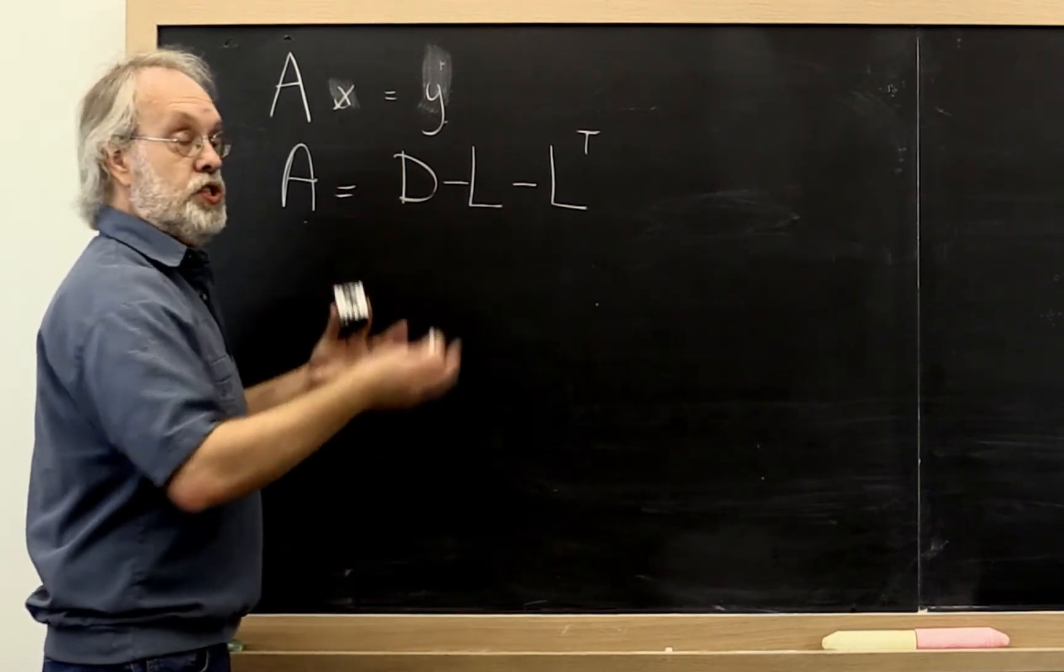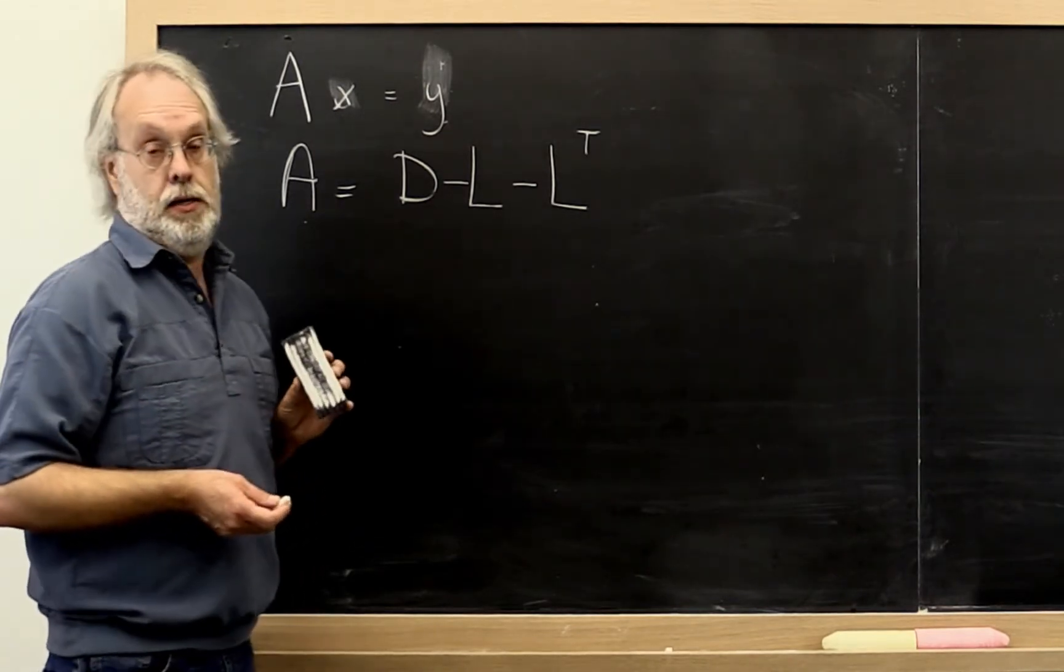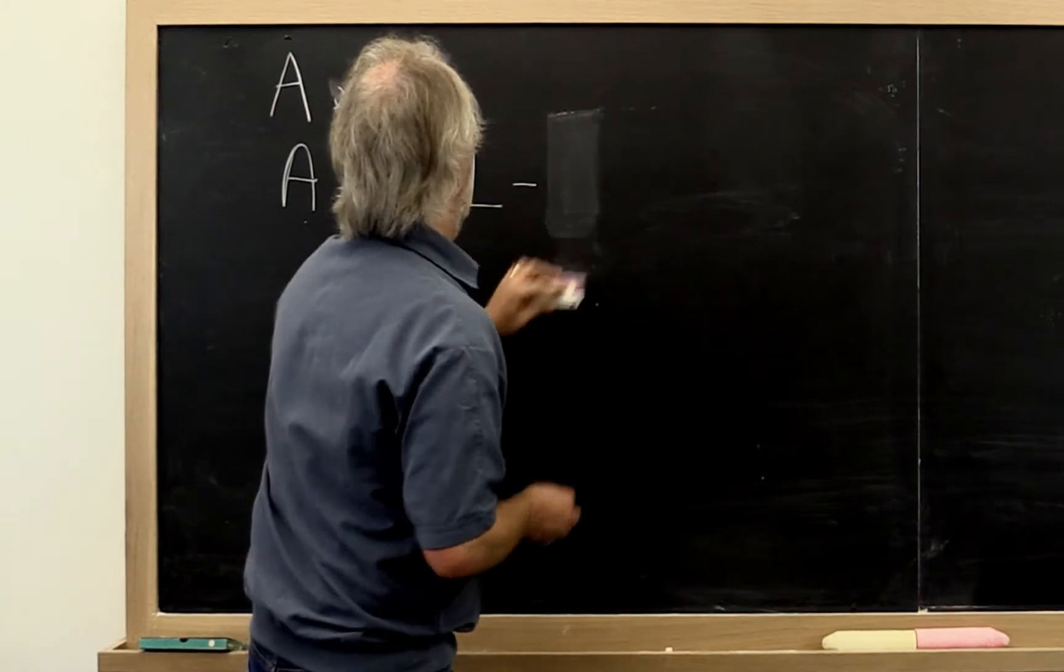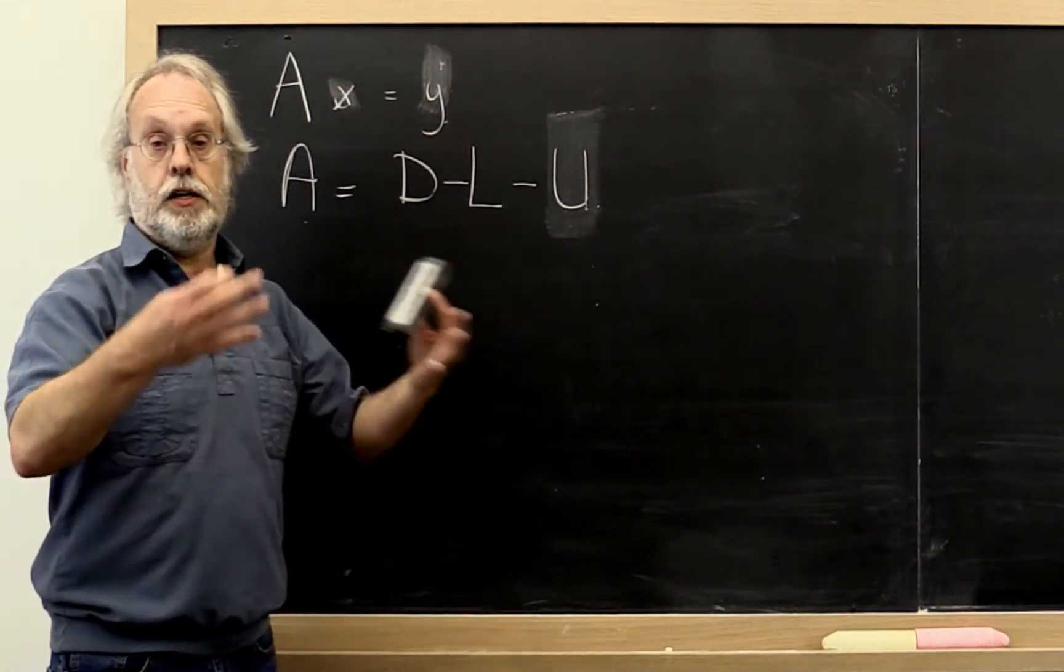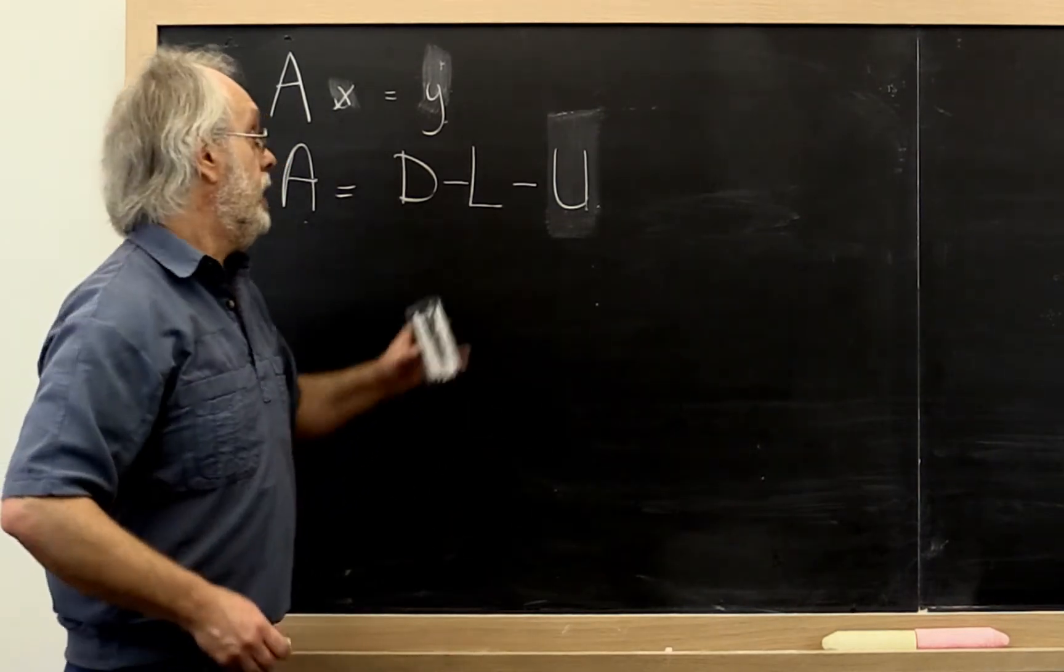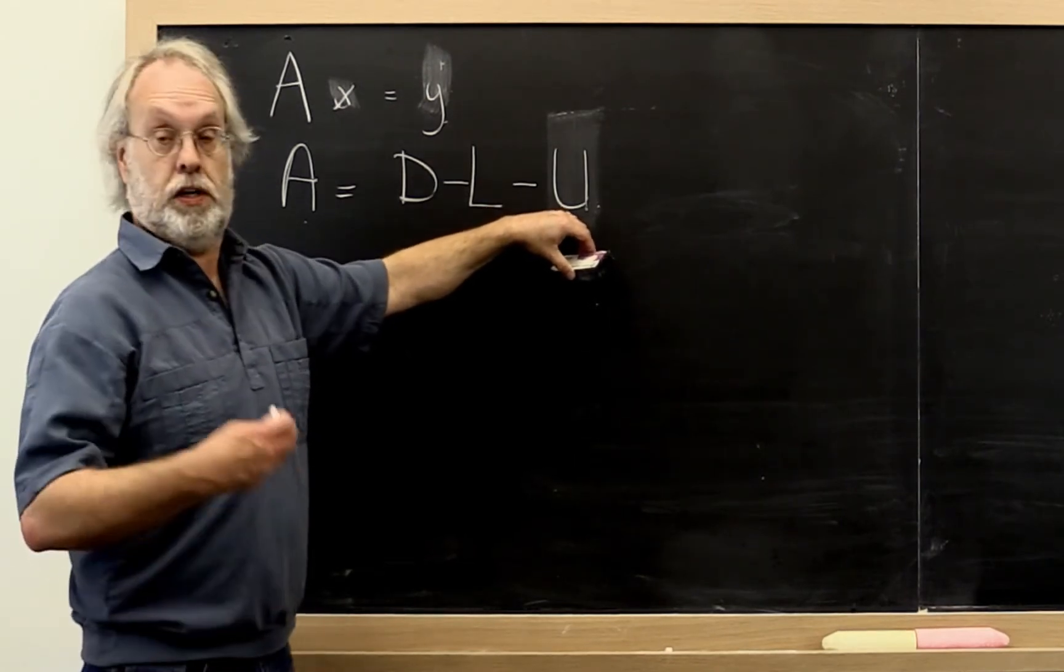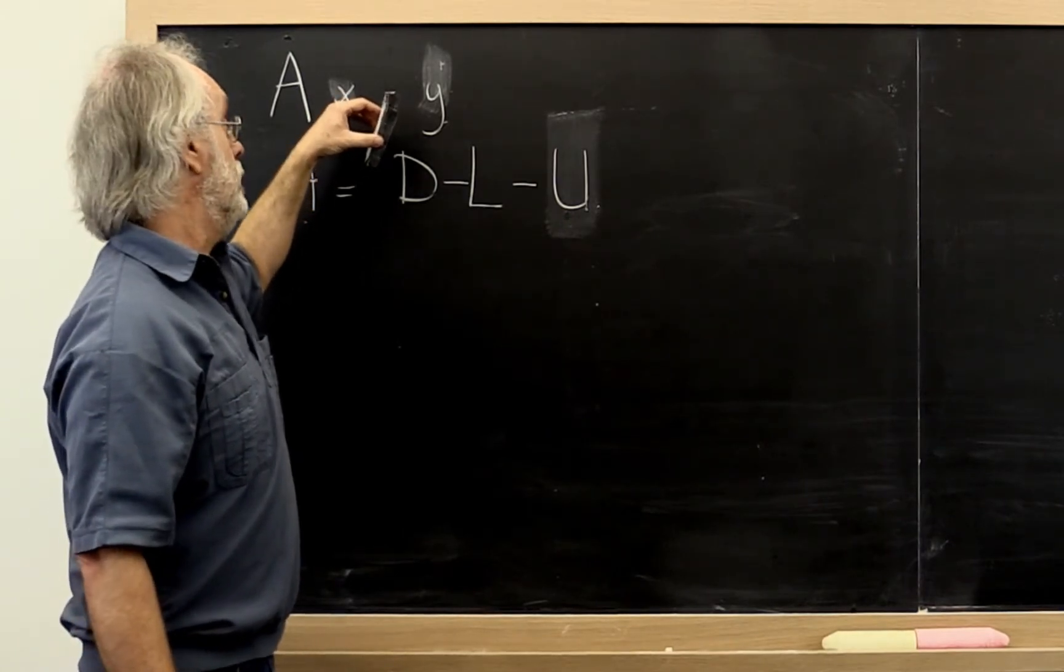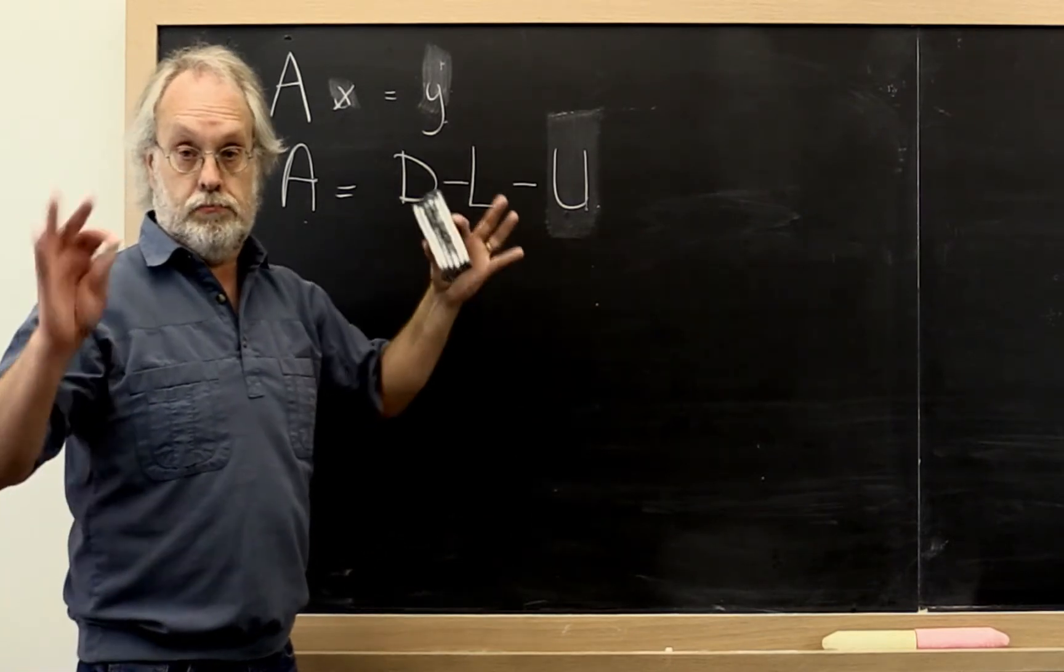And now we want to do it more generally where actually the matrix does not necessarily need to be symmetric. And therefore we are going to replace this with a U. So that is the negative of the strictly upper triangular part of the matrix. And we can use U because we won't be confused with the vector u that we had before because we've switched here to the vector x in that position.